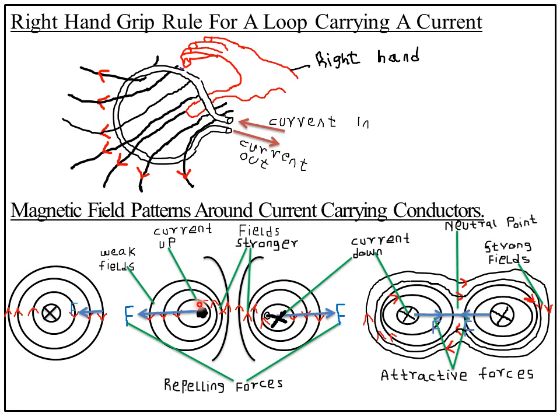Whenever you see a dot (•) in physics, it means the current is moving upwards or out of the paper. A cross means current is moving into the paper or downwards. A dot means the current is moving upwards or outside the paper.